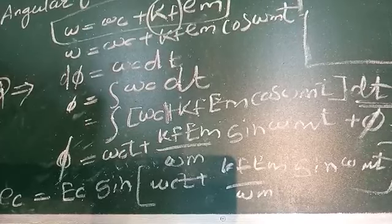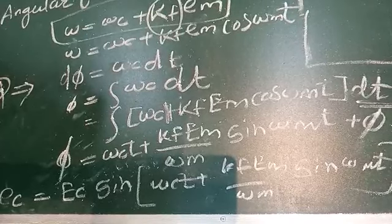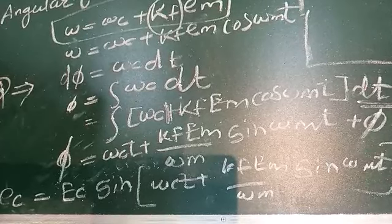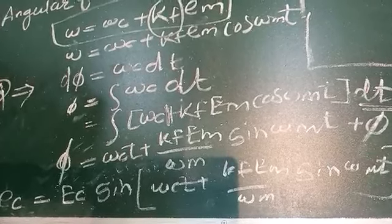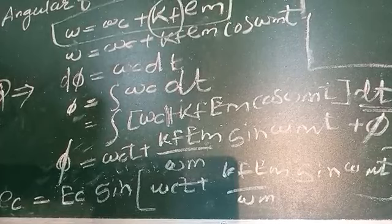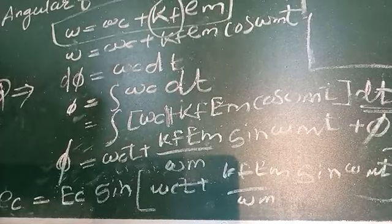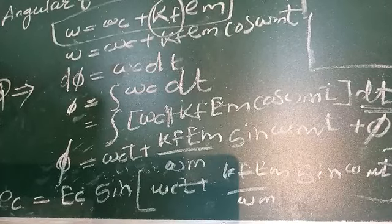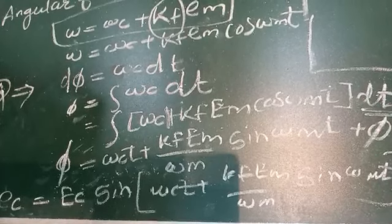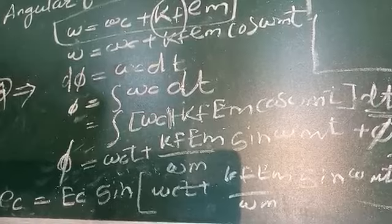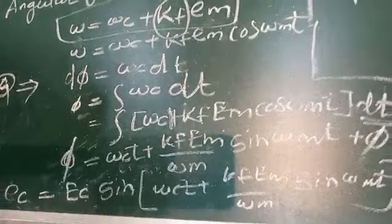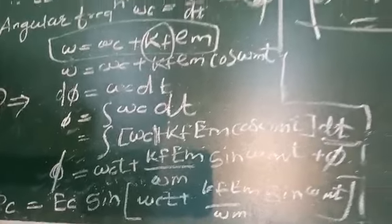Substituting φ back into the carrier equation, the final expression for the frequency modulated wave is: ec = Ec sin(ωc t + (kf · Em / ωm) sin(ωm t)). This is the mathematical expression for the frequency modulated wave.